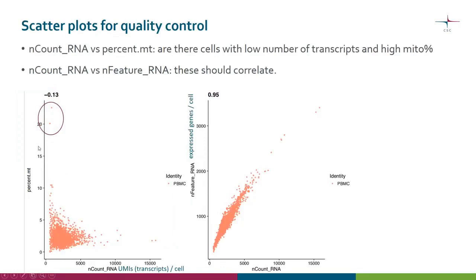There is also another plot using the same information but displayed as scatterplots. In the first one, we have the percentage of mitochondrial transcripts versus the number of transcripts — we want to see cells with a small total number of transcripts and a high mitochondrial percentage, which are likely dead cells. In the second scatterplot, we have the number of expressed genes per cell versus the number of transcripts per cell — these should show a relatively good correlation, as more detected genes should correspond to more UMIs.